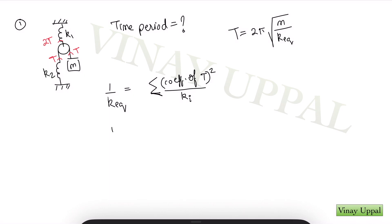So in this case you will have 1 by k equivalent - you can see the tension is T so its coefficient is 1. So I will have 1 squared by k2 plus what is the coefficient of the tension in the upper spring, that is 2T. So the coefficient is 2. So you will have 2 squared by k1 and you simply get your k equivalent and substitute it here to get your time period.